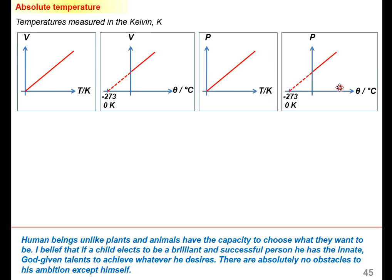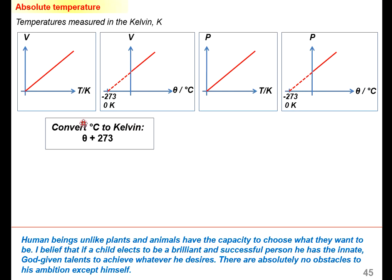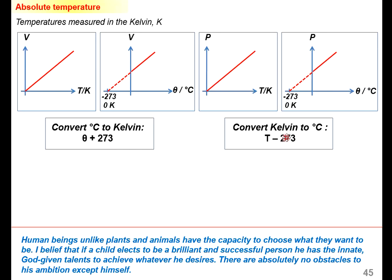But if it's pressure versus temperature with the unit degree Celsius, it's linearly increasing but with the x-intercept at negative 273 degrees Celsius, or zero Kelvin. To convert temperature from degree Celsius to Kelvin, use: T(K) = θ(°C) + 273. To convert from Kelvin to degree Celsius: θ(°C) = T(K) − 273.